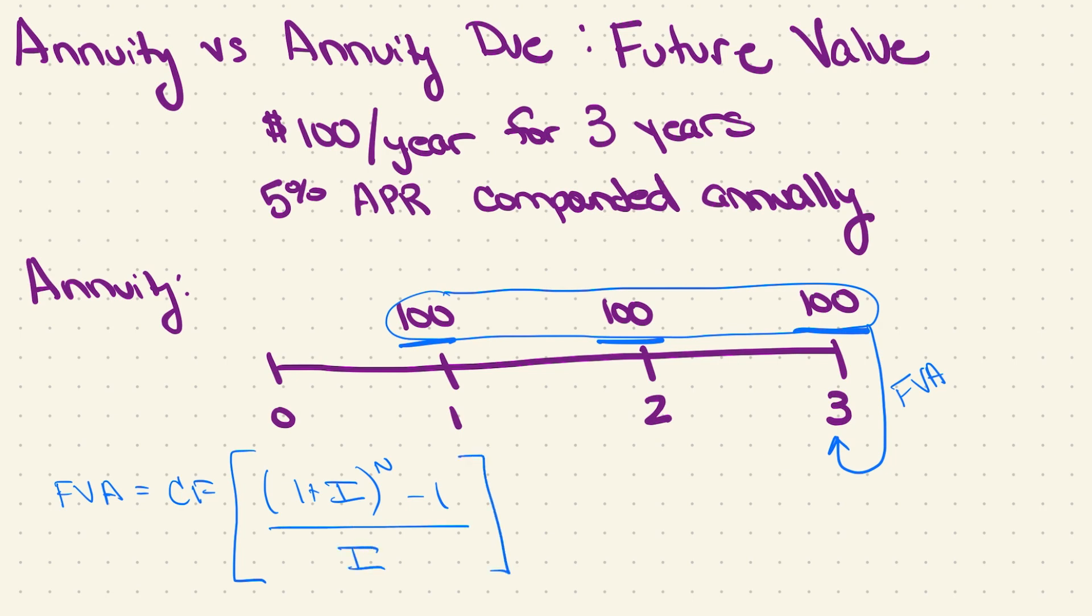So in this problem, our repeating cash flow is $100. Our i, in this case, everything's annually, so our i is going to be the annual rate, 0.05. And then our n is the number of annual cash flows here, so that'd be three. So when I plug this in, I end up with an answer of $315.25.